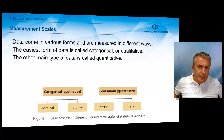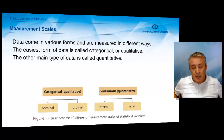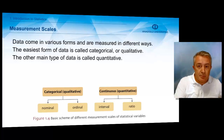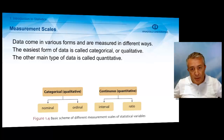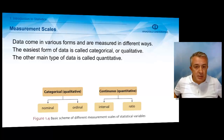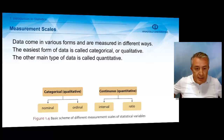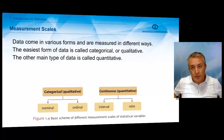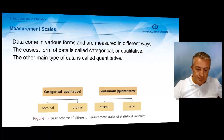Once you collect data, you will notice that data comes in many different forms, which is easy to see in daily life. When you get up in the morning and look at the watch, that is one measurement type. When you choose between a white, red, or yellow shirt, that is another kind of information. There are classifications about data. We have categorical data, also called qualitative data, and quantitative data. Quantitative data usually comes in the form of numbers, while categorical data comes in the form of categories.